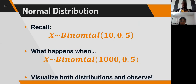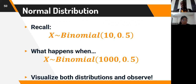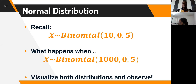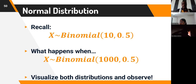With the normal distribution, if we recall what we did earlier, we described a binomial distribution of 10 coin flips and a 50% probability of coming up heads — that is a fair coin. The idea is what would happen if we also have a binomial distribution of 1,000 coin flips with a 50% probability of getting heads. Then we will try to visualize both distributions and observe what is really going to happen.